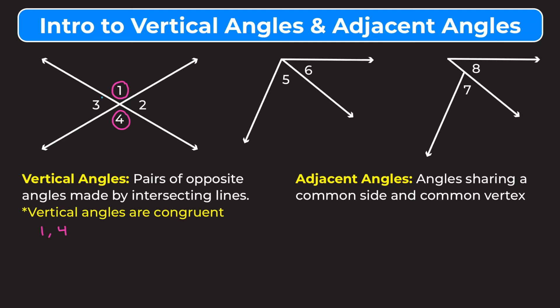Angles three and two are also vertical angles. Basically the angles that are across from — opposite of — each other when two lines intersect are vertical angles, and those angles are going to be congruent. So the measure of angle one equals the measure of angle four, and the measure of angle three equals the measure of angle two.